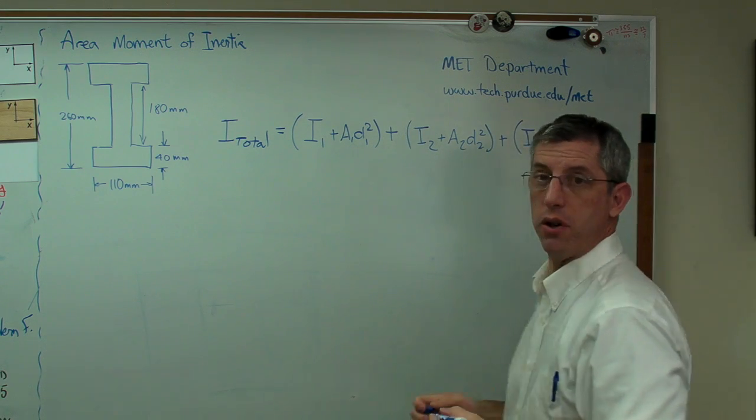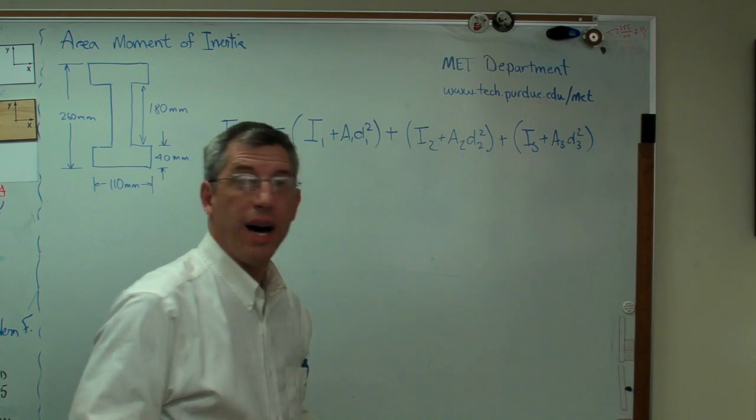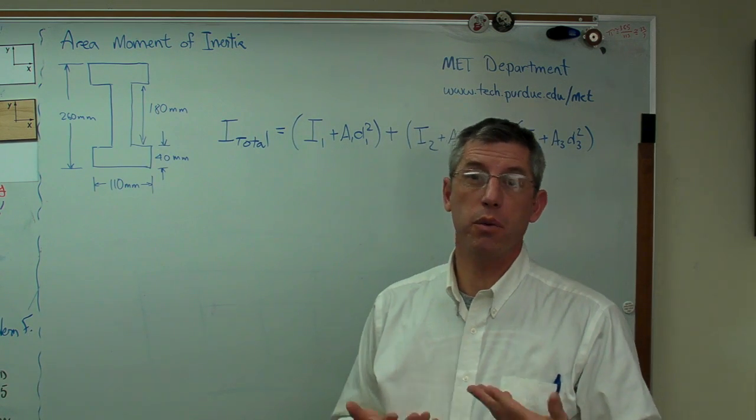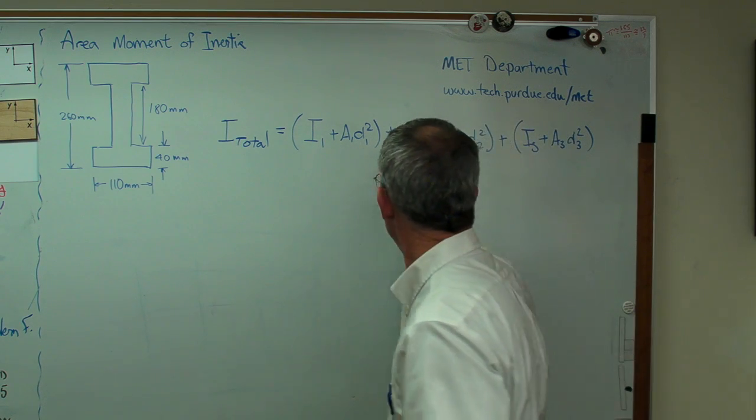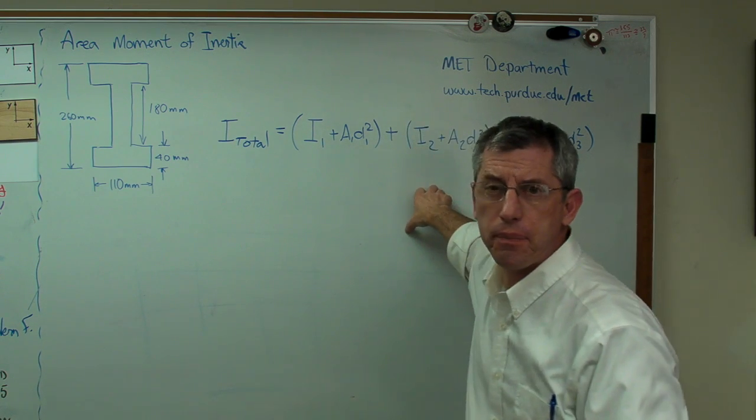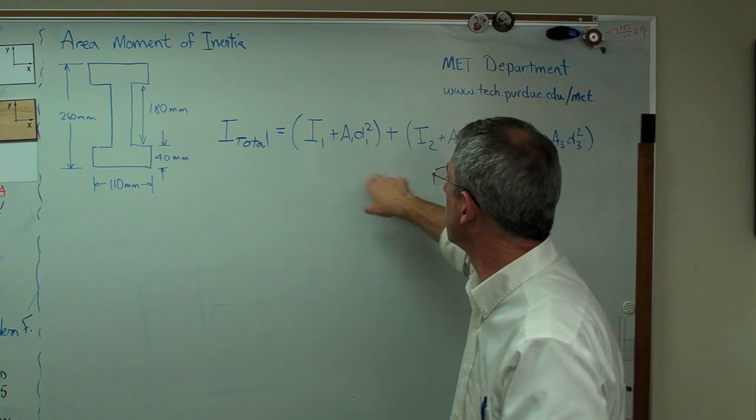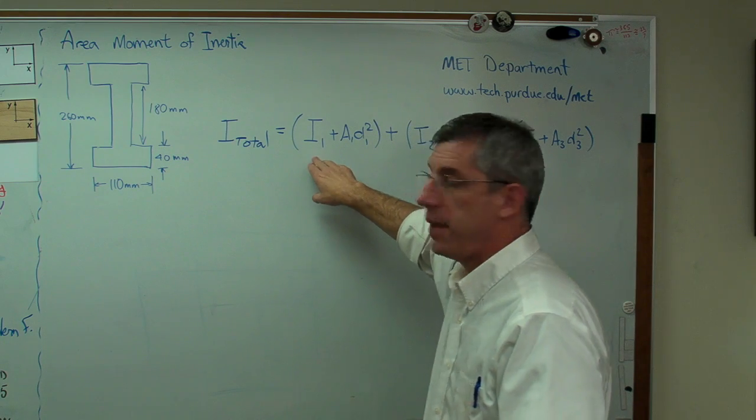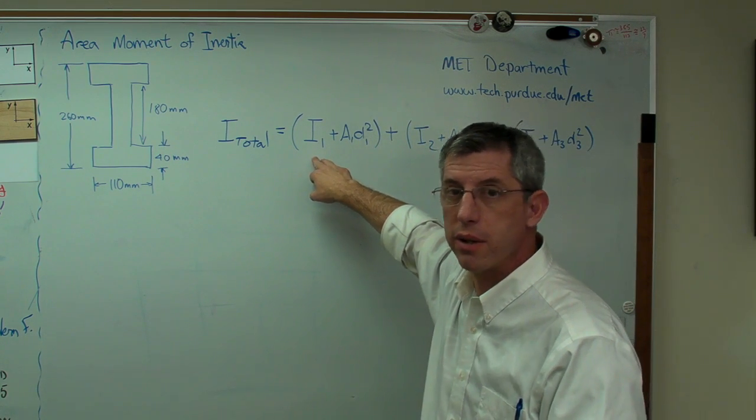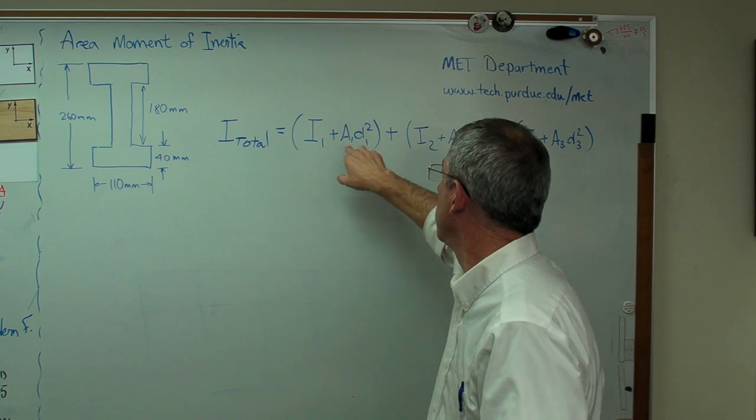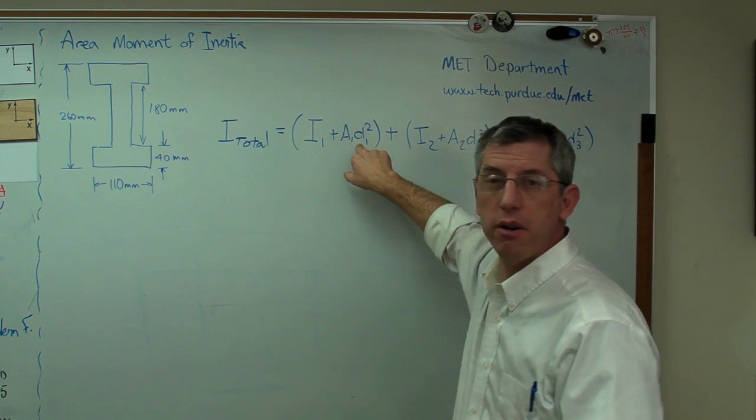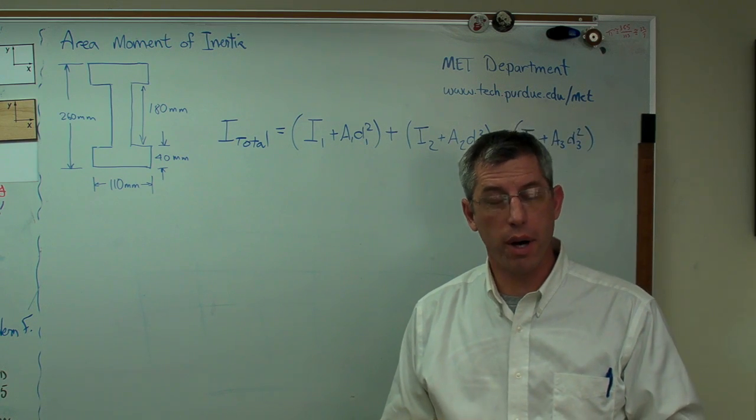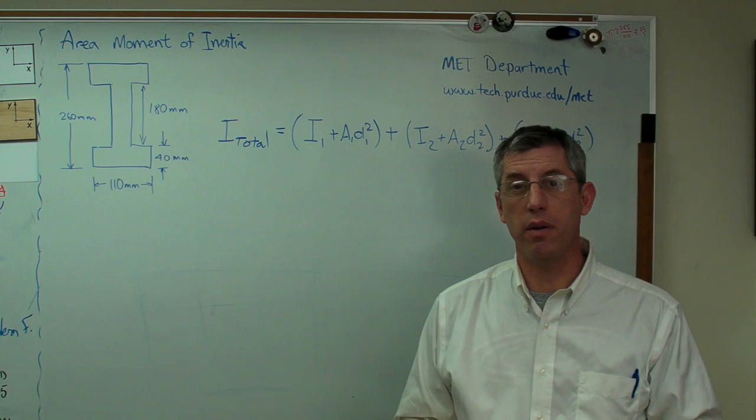I've got three terms on here because no matter which way I do this, I happen to be using three boxes. If you've got a more complex shape that requires you use more than three boxes, that's okay, you just start adding more of these on. Let's look at the terms themselves. I-1 is the area moment of inertia of the first box. This is its area. This D here is important. D is the distance between the centroid of the individual box and the centroid of the entire shape.